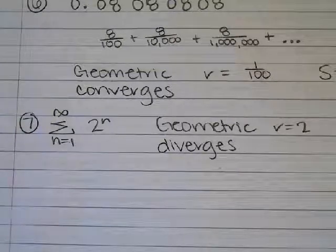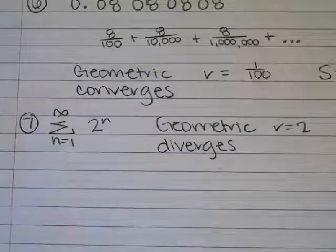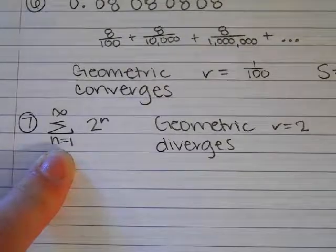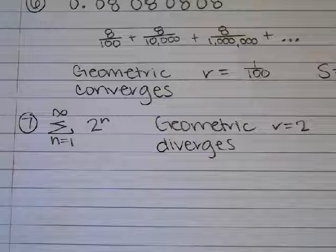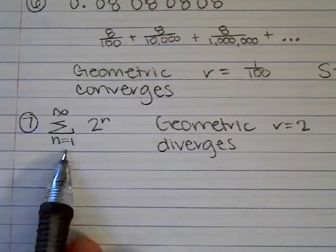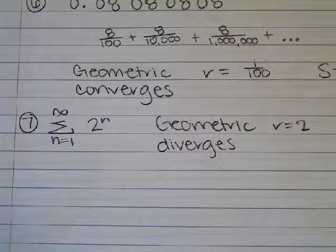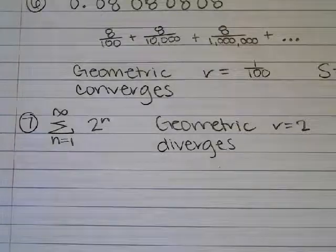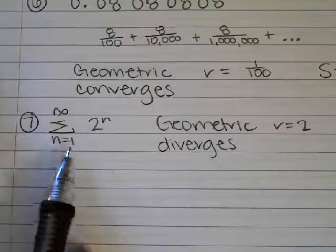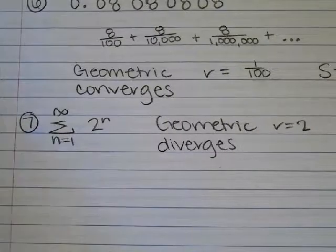They always start with N equals 1 because that's telling you what term to start with — plug in 1, which is typical. You're never going to have a negative here because you never write down the negative fifth term. You always start with the first term, then write the second, third, fourth, and then it goes to infinity because this is an infinite series. You could write down plus the next term forever and never be done.